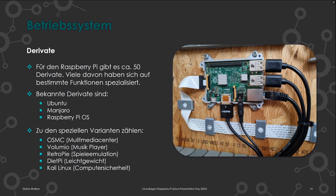OSMC bootet direkt in ein Multimedia-Center. Volumio ist ein Music Player. RetroPie ist für Spiele-Emulation – man hat damit einen Emulator und kann alte Spiele spielen. DietPi ist ein super abgespecktes Betriebssystem für den Raspberry Pi. Und für alle, die es fragen: Kali Linux für Computersicherheit ist verfügbar, aber beim Linux Presentation Day, wo man mit Linux anfangen will, ist Kali sicherlich nicht die richtige Wahl.